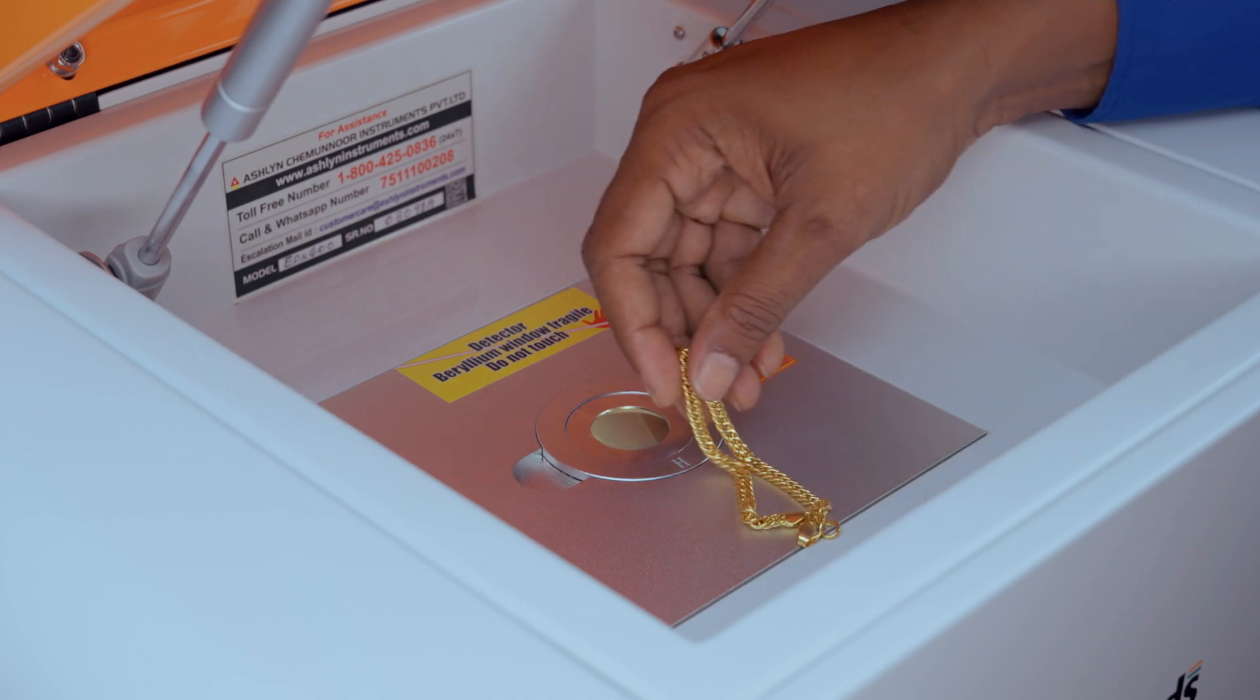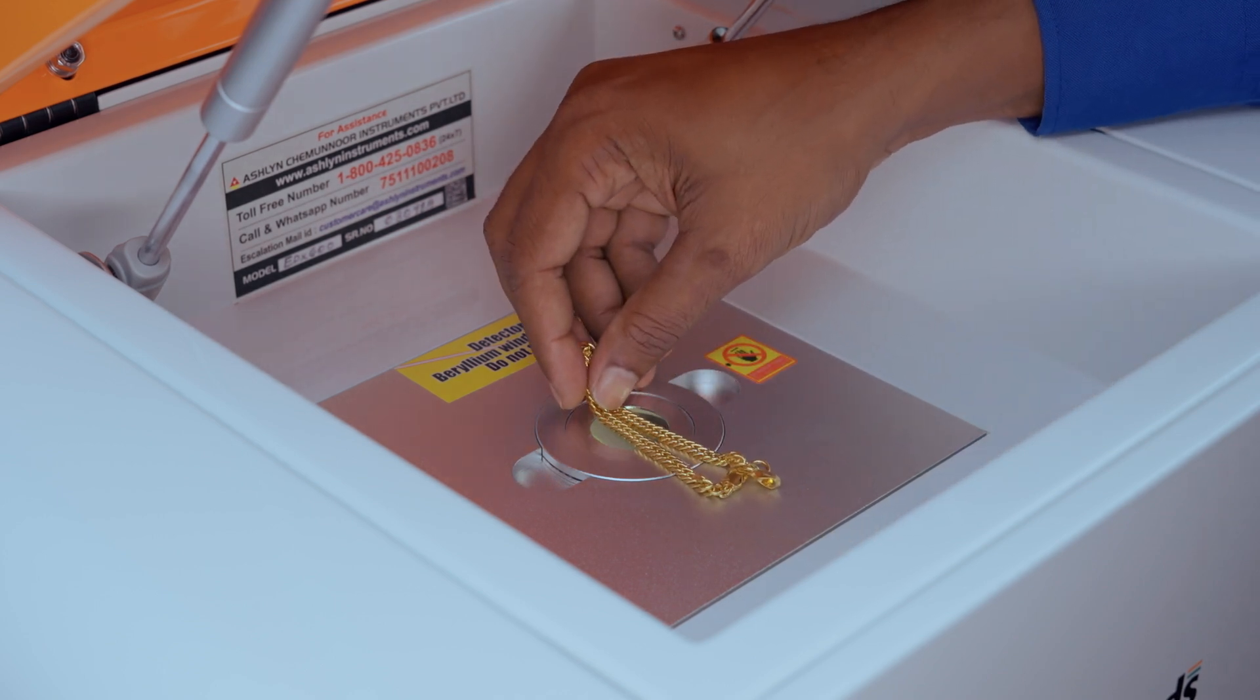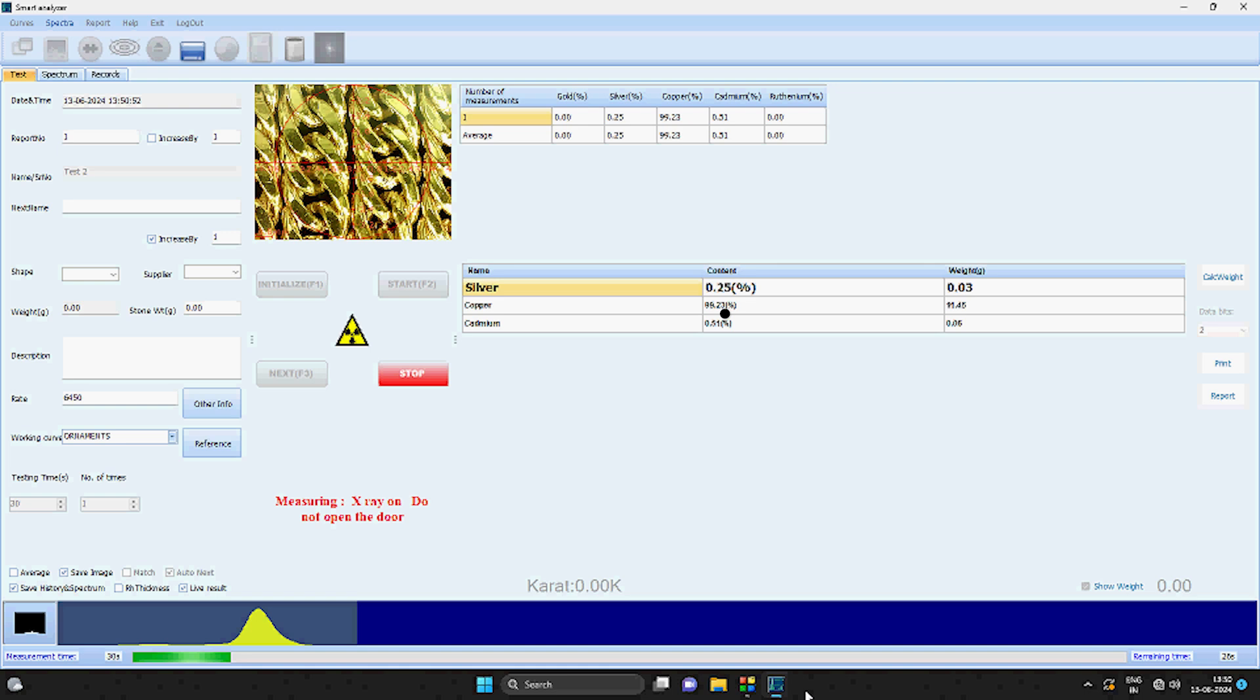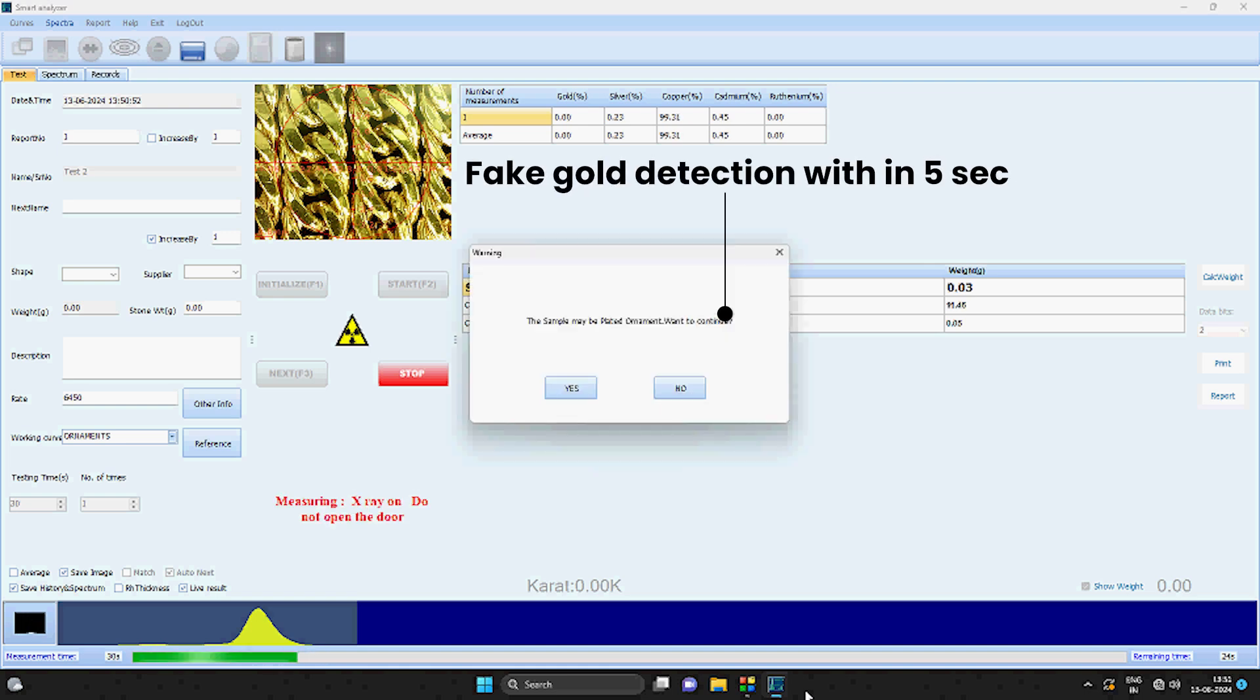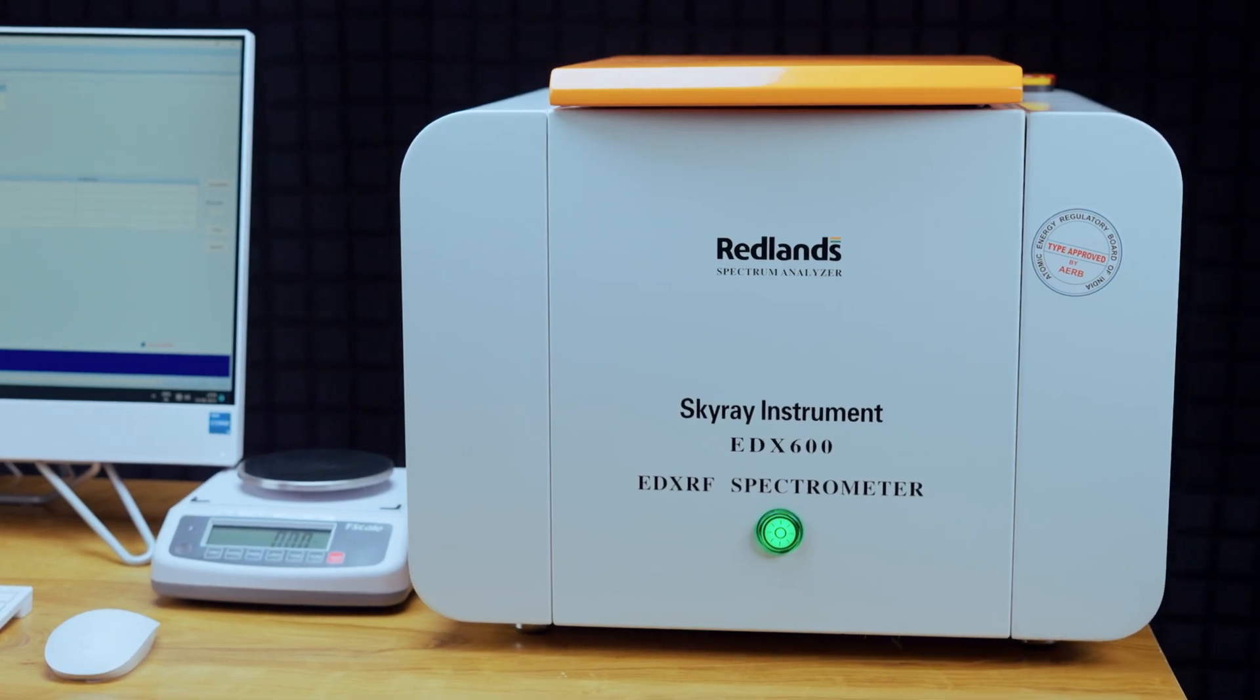Redlands advanced software also features a warning alert within 5 seconds if it detects ornaments made of very low purity or spurious materials, prompting further verification or investigation.